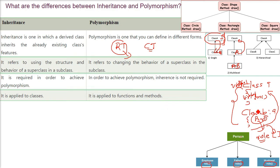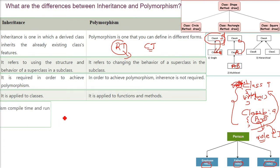Inheritance is applied to classes — we are talking about two different classes. Polymorphism, on the other hand, is applied to functions and methods.